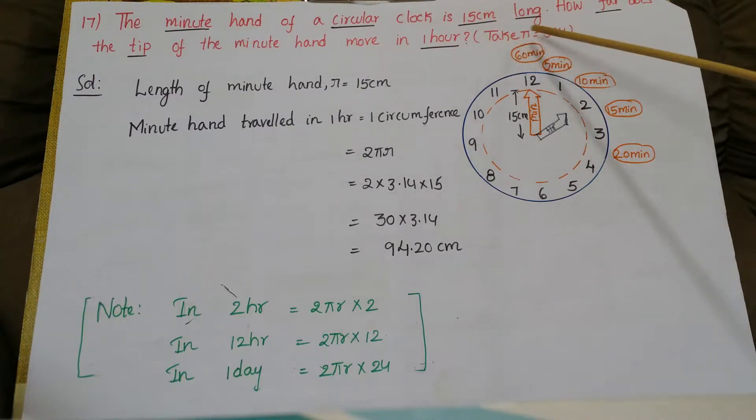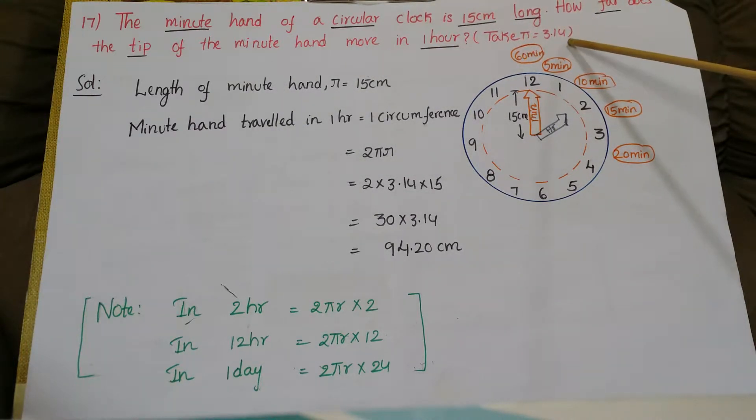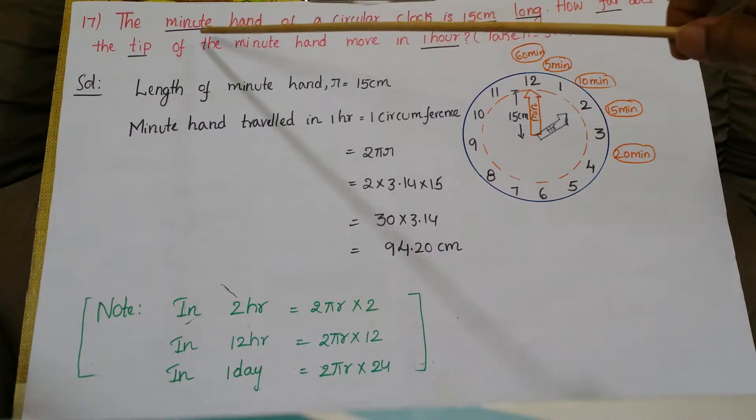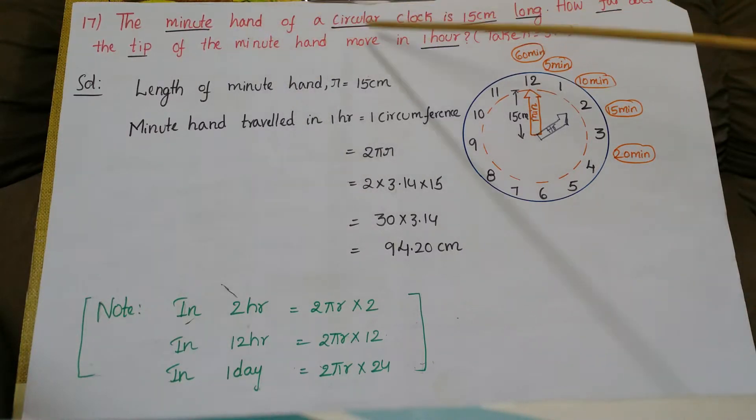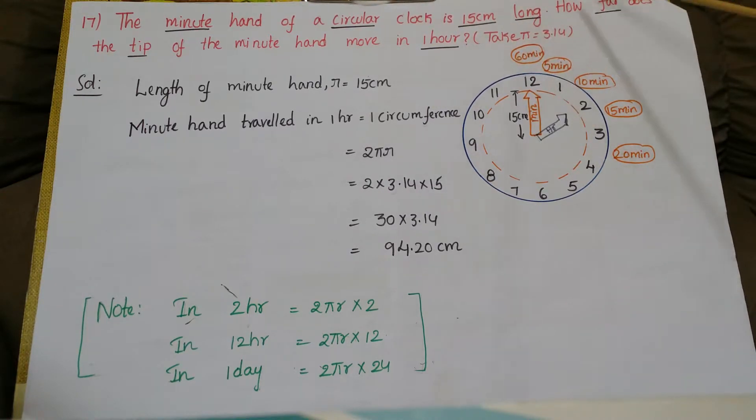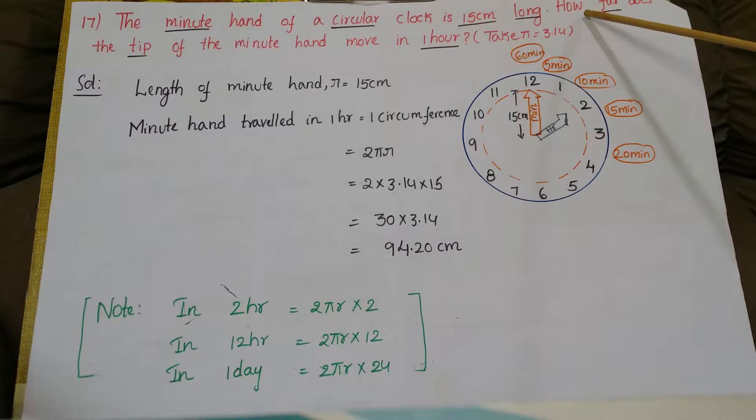So underline the important words here. They have given the minute hand and circular clock. The length of the minute hand is 15 centimeters long, and we have to calculate the distance traveled by the minute hand in one hour.